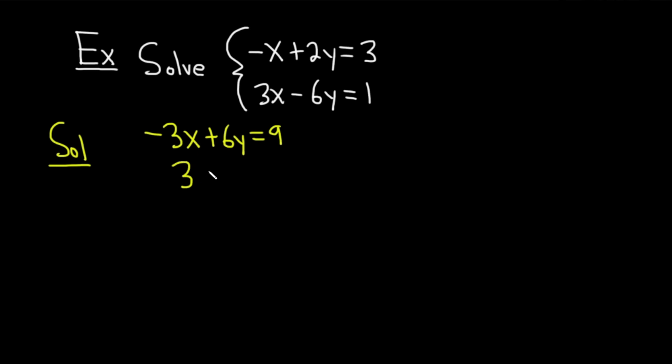And we can write the second equation right below it. And now we can add. Adding these, we get negative 3x plus 3x, we get 0. 6y plus negative 6y is 0. 9 plus 1 is equal to 10. So we get 0 equals 10.